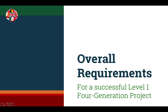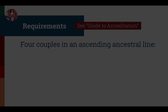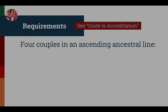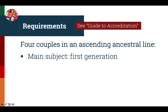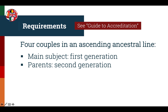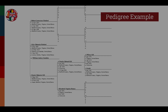Let's start with the overall requirements for submitting a successful Level 1 4 Generation Project. The first requirement is that the applicant links four generations that follow an ascending ancestral line. One easy way to understand this is through the relationships to the main subject. The main subject will be the first person on the pedigree chart, the second generation will be the parents, the third generation will be the grandparents, and the fourth generation will be the great-grandparents.